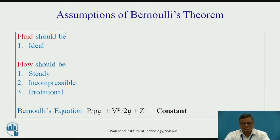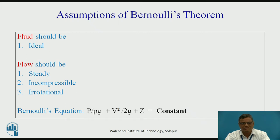The first assumption of Bernoulli's Theorem is that the fluid should be ideal. We are revising these assumptions as we have dealt with them in the first section. Ideal fluids are fluids which have zero viscosity — that is, the fluid will not have any viscosity. In the real world, a number of fluids exist and all of these fluids have some degree of viscosity.